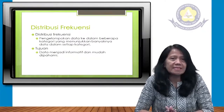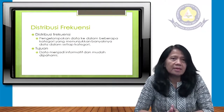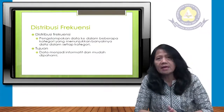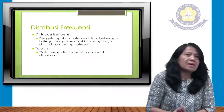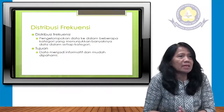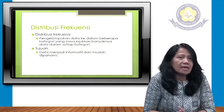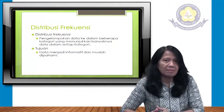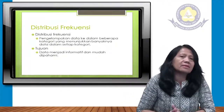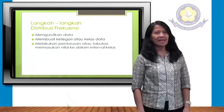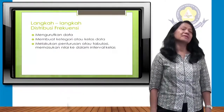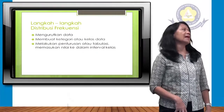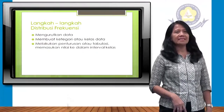Distribusi frekuensi adalah pengelompokan data ke dalam beberapa kategori yang menunjukkan banyaknya data dalam setiap kategori. Tujuannya agar data menjadi informasi yang mudah dipahami. Langkah-langkah distribusi frekuensi: satu, mengurutkan data — ada dua cara: ascending dan descending.